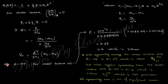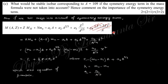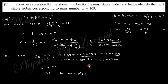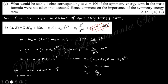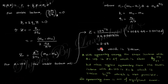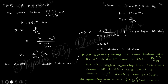Z = 3 corresponds to Lithium. But Lithium with A = 109 is physically impossible. This shows that without the symmetry term, we get Z = 3 for A = 109, which cannot exist. With the symmetry term included we correctly get Z = 47 (Silver). This demonstrates that the symmetry term is one of the most important terms in the semi-empirical mass formula.